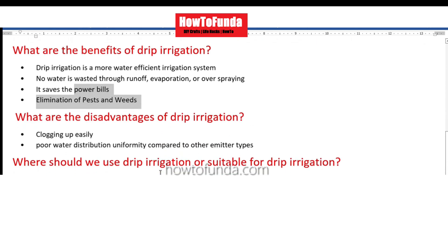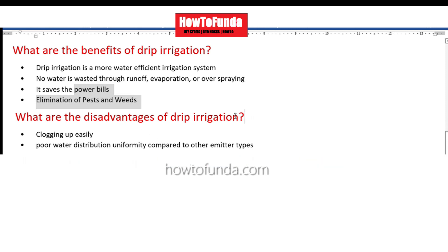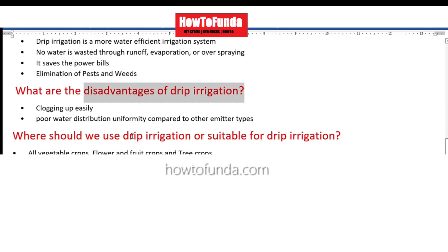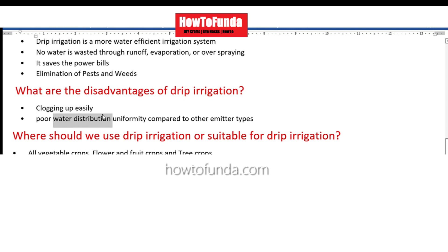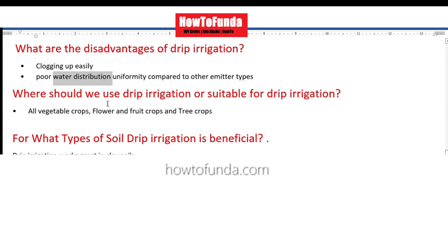Now we understood the benefits or advantages of drip irrigation. Let's try to understand the disadvantages. Basically, the entire system may get clogged if it is not maintained properly. If we do not maintain the drip irrigation pipeline properly, it may happen that water is not getting supplied to all the plants.